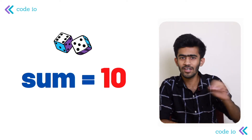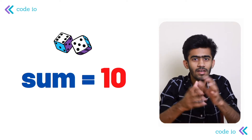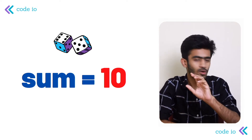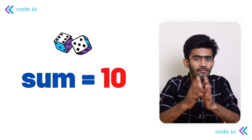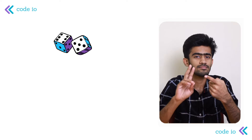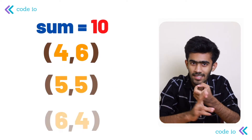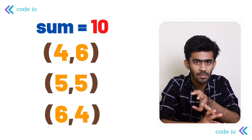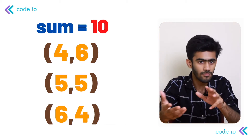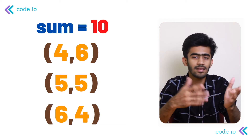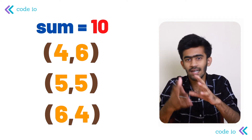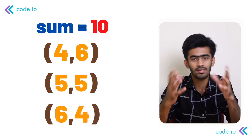We'll first solve the sample input, find the logic, and then go to the coding part. Out of the 36 pairs, which pairs add up to the given sum? These pairs are 4,6 and 5,5 and 6,4 — the inverse of the first one. These pairs add up to 10: 4 plus 6 is 10, 5 plus 5 is 10, and 6 plus 4 is 10.